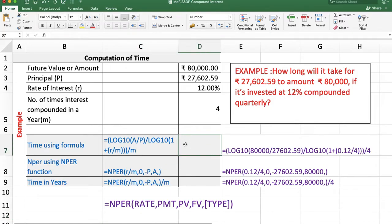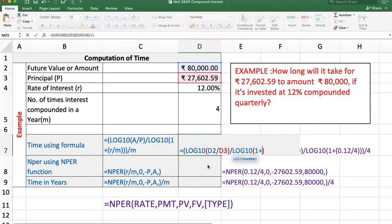First, using the formula: =LOG10(Amount/Principal) / LOG10(1 + Rate/M) / M. Enter.